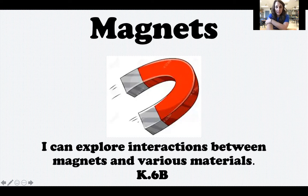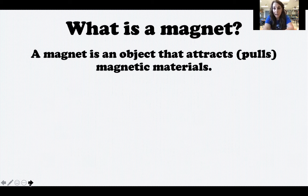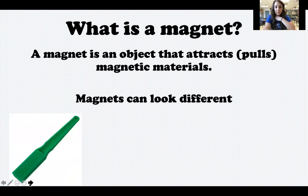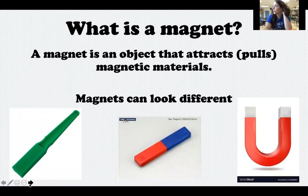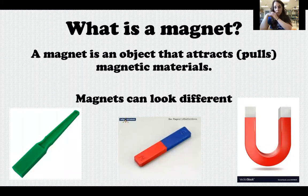Our learning target says I can explore interactions between magnets and various materials. A magnet is an object that attracts or pulls magnetic materials towards it. Magnets can look different. Here are some types you may have seen at school: this one's called a wand magnet — I have one right here that's also green — this one's called a bar magnet, and this one's called a horseshoe magnet. They all look different but they all work in the same way, attracting magnetic materials to them.